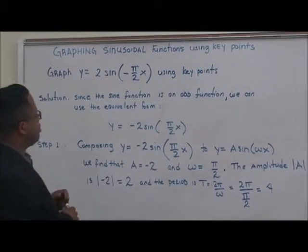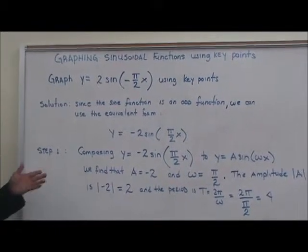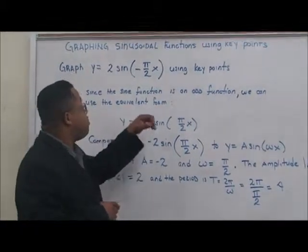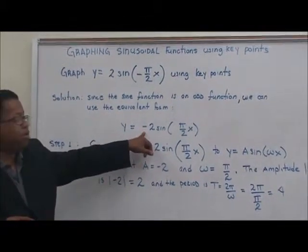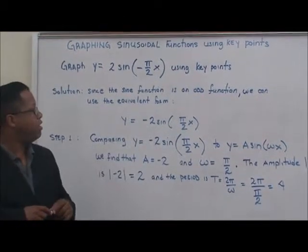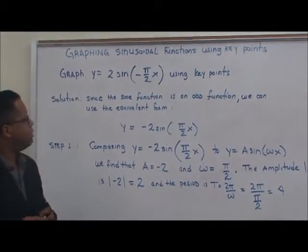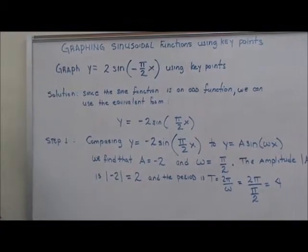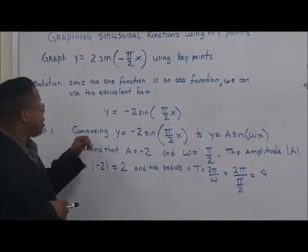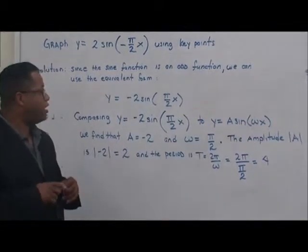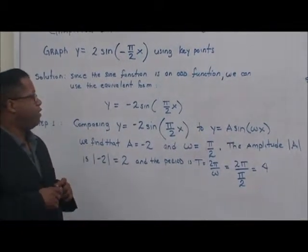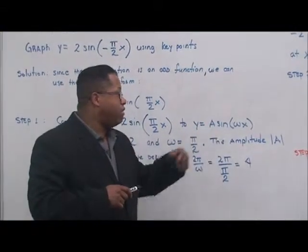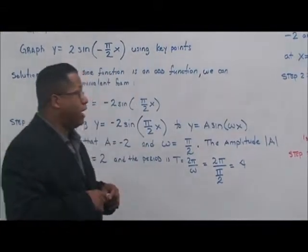The solution is that since the sine function is an odd function, we can use the equivalent form of this: negative 2 sine of pi over 2 times x. Now let's talk about the steps. Step 1: comparing y equals negative 2 sine of pi over 2 times x to y equals a times sine of omega times x.